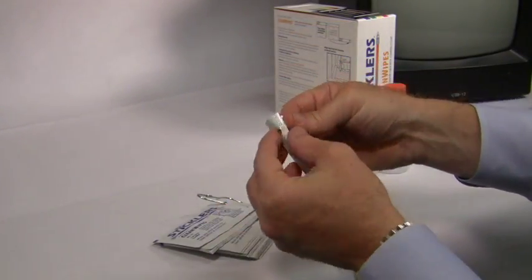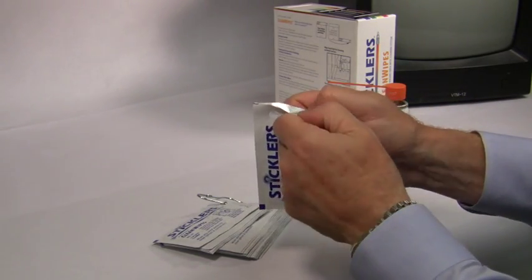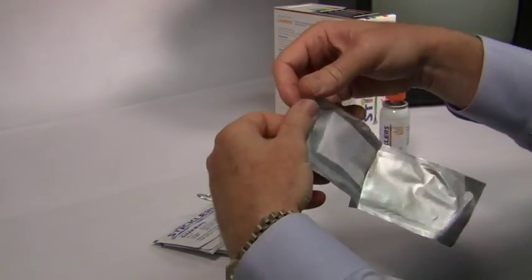Setup for the CleanWipes single pack is as simple as peeling away the two halves of the package. Start where the arrow is at the top of the package, pull it apart, and you are ready to clean.